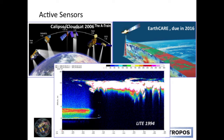I decided to include the LITE mission from 1994 — the Lidar In-space Technology Experiment — flown on the Space Shuttle. I think the instrument actually failed before they had to bring it down, but I worked with this data at a summer school around 2000 and was very much fascinated by these vertically resolved plots. Even covering only a few orbits, it was the first time people saw this type of data, and it was more or less the starting point for developing the CloudSat/CALIPSO missions.